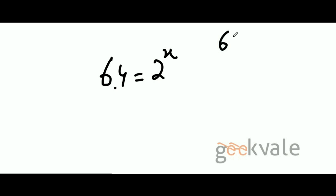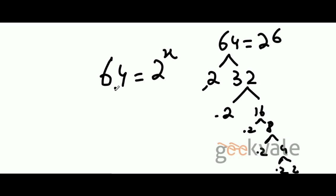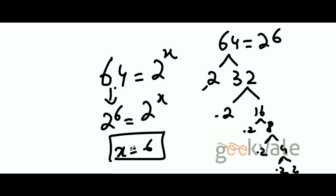Again, draw a factor tree for 64. The left leg is 2, and the right leg is the other factor pair. So 2 times 32, then 2 times 16, 2 times 8, 2 times 4, and 2 times 2 — which cannot be broken down further. Counting the 2s: 1, 2, 3, 4, 5, 6. So 64 is 2 to the power of 6. Replace 64 with 2 to the power of 6 equals 2 to the power of x, giving x equals 6. That is how you determine what x is in this kind of situation.